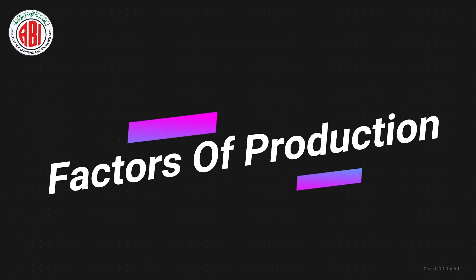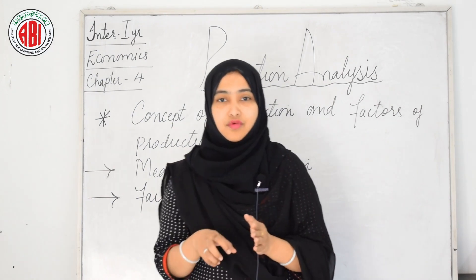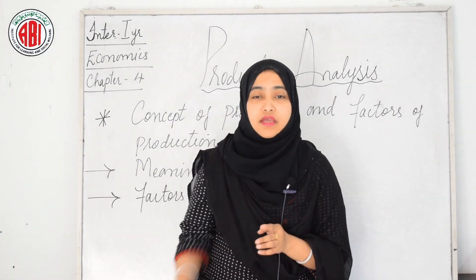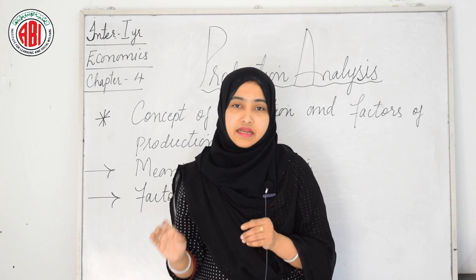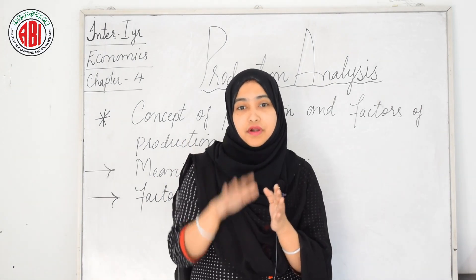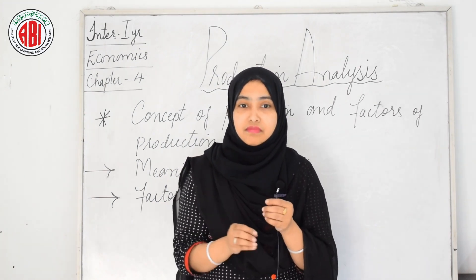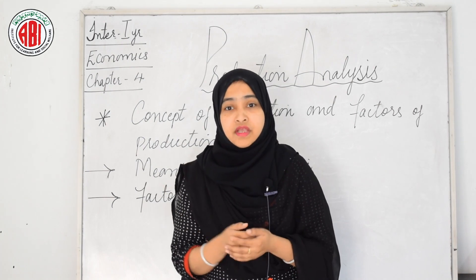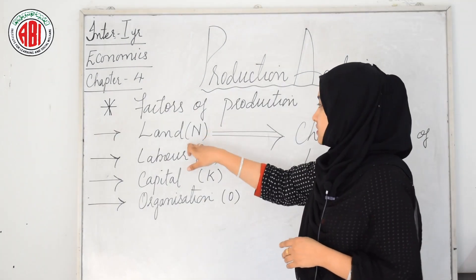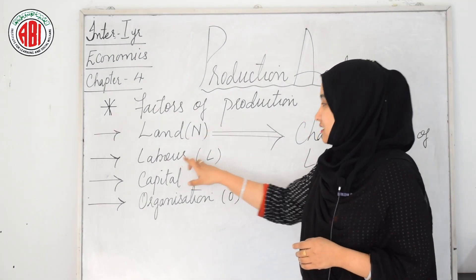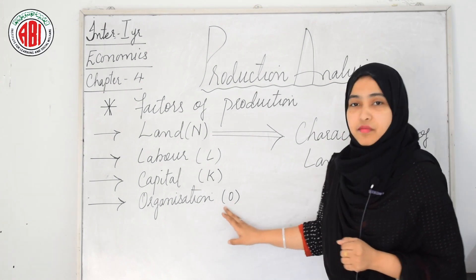Now we will see the factors of production. The process of producing goods in the modern economy is very complex. A good has to pass through many stages until it reaches the consumer's hand in finished form. For the production of goods and services there must be factors of production, which may be natural and manual. There are four factors of production: land, denoted by N; labor, denoted by L; capital, denoted by K; and organization, denoted by O.